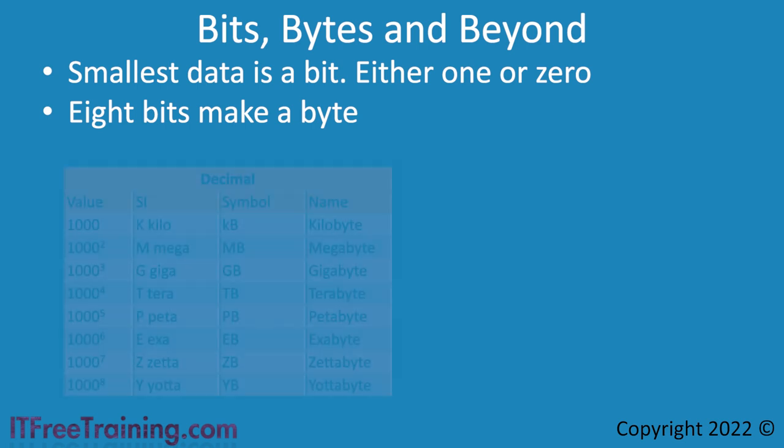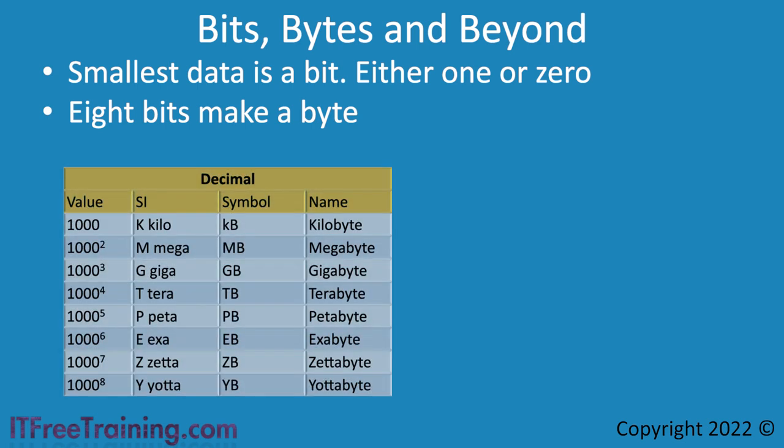Next, I will look at how data is measured using the decimal system. The decimal system for measuring data comes from the International System of Units, often abbreviated as SI. It is based on a base of 1,000. As you move down the table, 1,000 is raised to a higher power, and with each power there is also a symbol and name that goes with it.